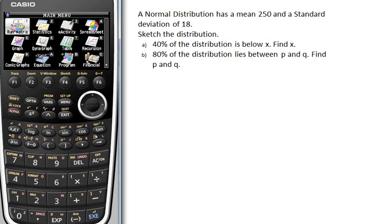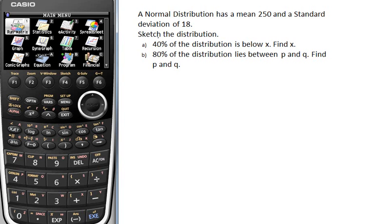So in this question, we're going to use the calculator to work out inverse normals. In other words, you're given a probability and asked to find a number. Or in this case, it's a percentage that you've been given, and you've been asked to find a number from it. But it starts with sketching the distribution, so let's do that.